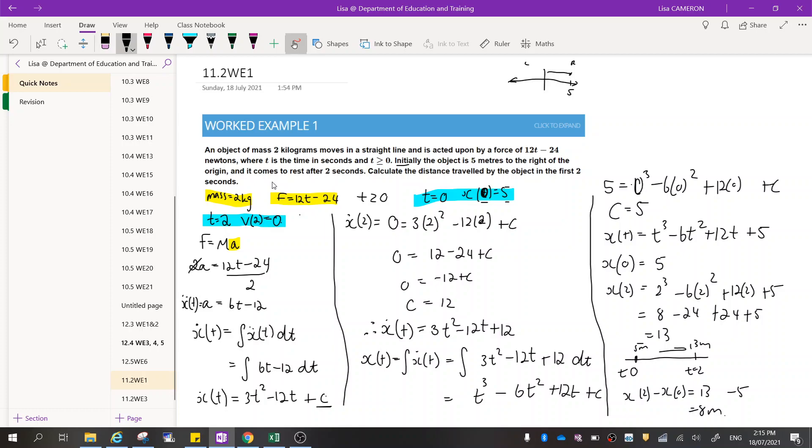Initially, the object is 5m to the right of the origin. Now that information is important because if it's to the right, then that's a positive direction on the number line, meaning that it is going to be positive 5. If it was to the left, it would be negative 5 because that's the negative direction on the number line. It comes to rest after 2 seconds. Now that means that when t is equal to 2, your speed or your velocity is 0 because it's at rest, it's no longer moving. Calculate the distance travelled by the object in the first 2 seconds.